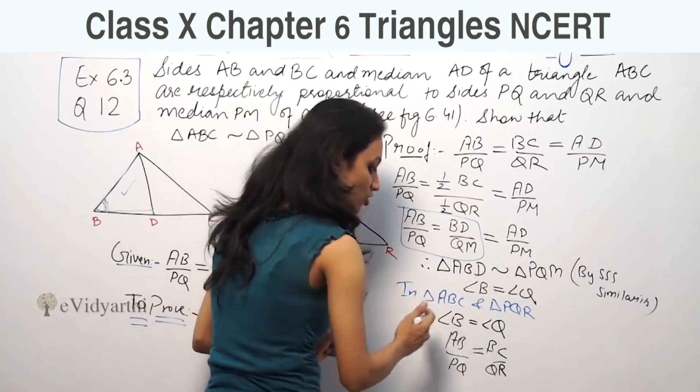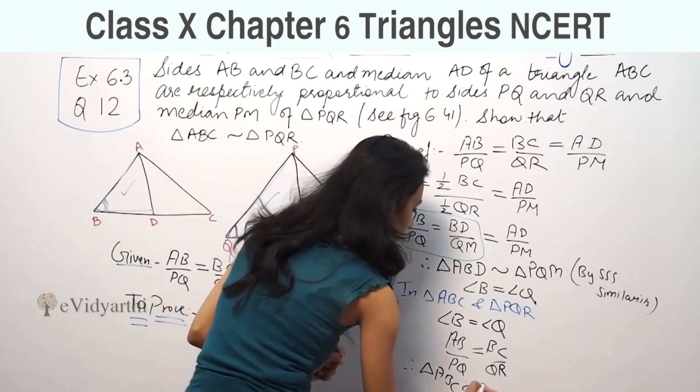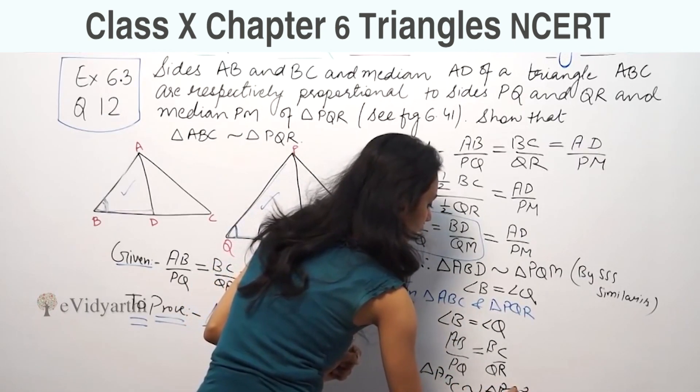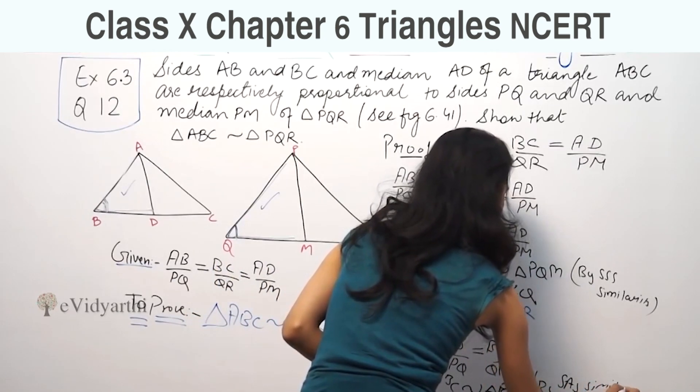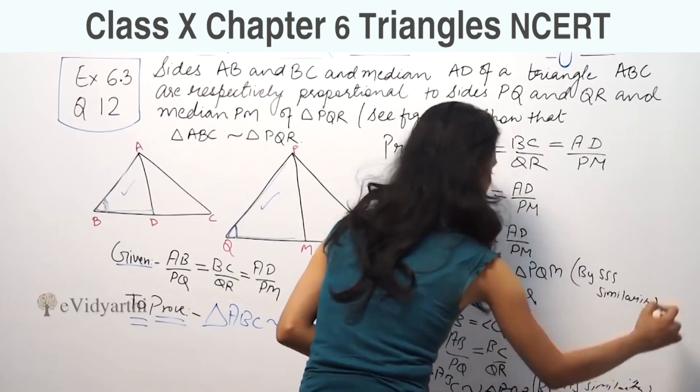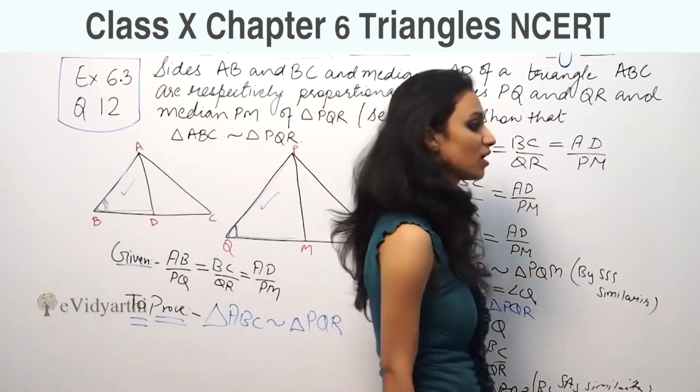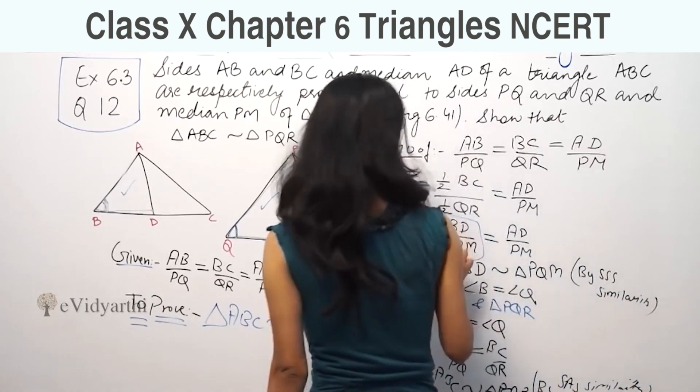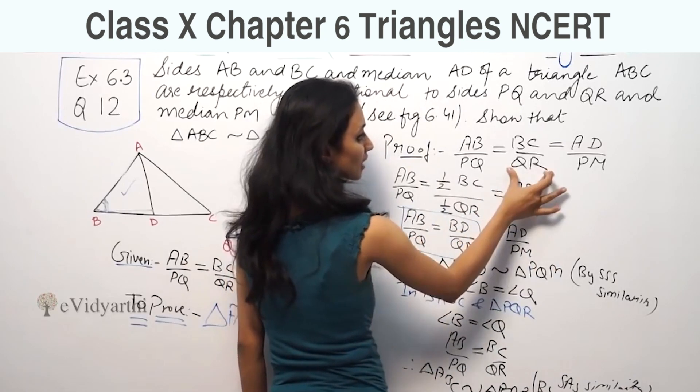Therefore, triangle ABC is similar to triangle PQR by SAS similarity. So this triangle is now proven to be similar to that one, which is what was required.